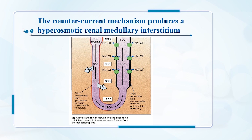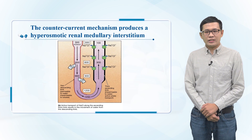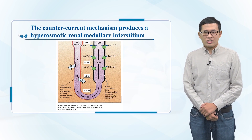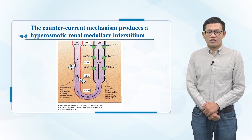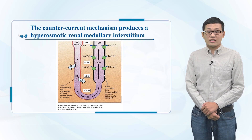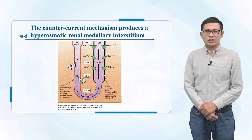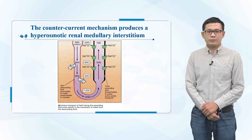So when new filtrate comes down in the descending loop in front of it, water passively flows out and into the supersalted interstitial space. Since most of the water is picked up by the blood pretty quickly, the saltiness of the interstitial space doesn't get diluted, so it can keep drawing water out of the next batch of filtrate in the descending limb.